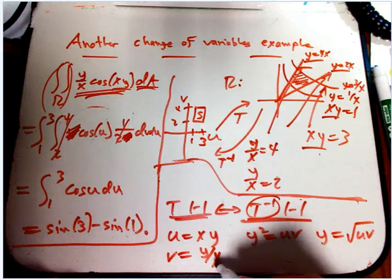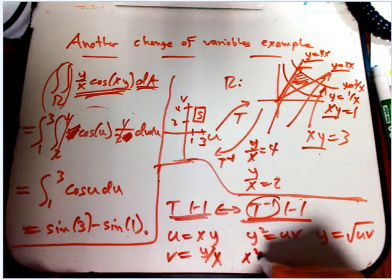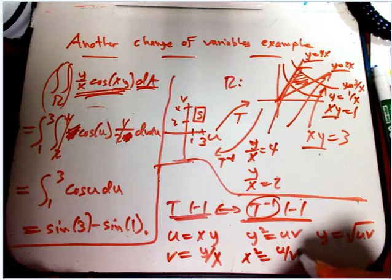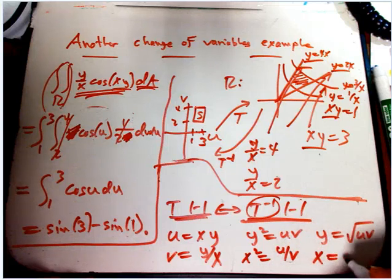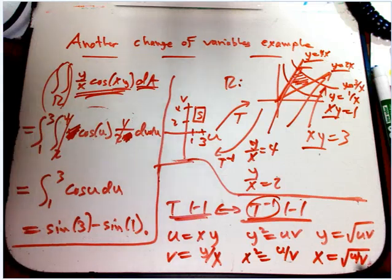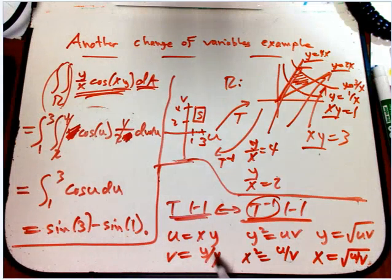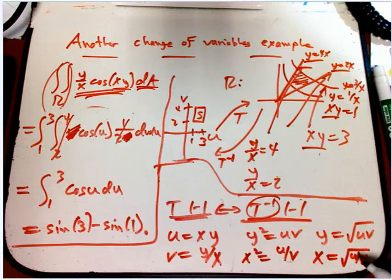And then, if you divide this by this, you get that x squared is u over v. So x is the square root of u over v. Notice that it's sort of similar to this. It's still about multiplication and division, but you get square roots in here.